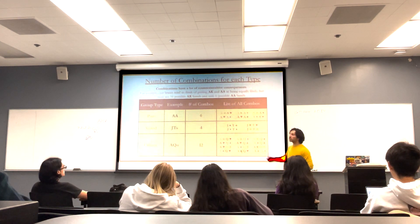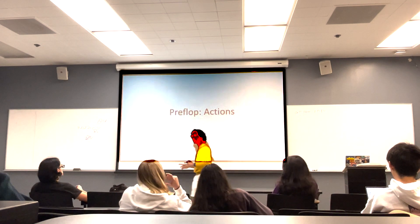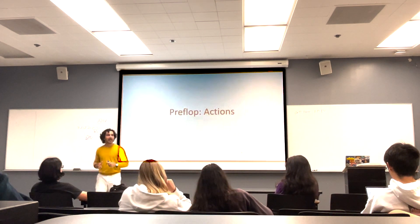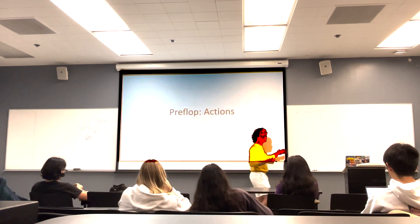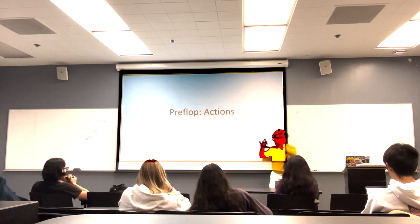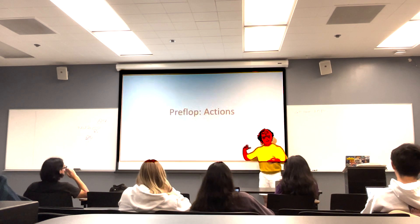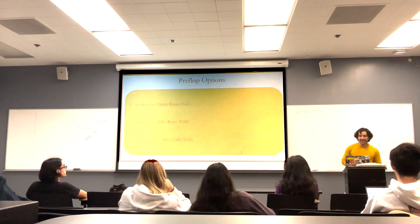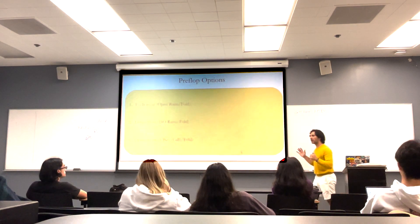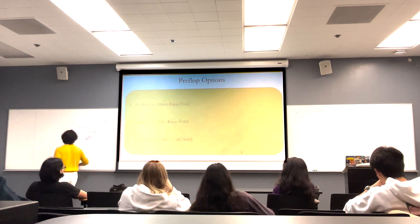With an understanding of the matrix, pot odds, implied odds, and the rules of the game — understanding our two preflop cards, the flop being the first three community cards, and the turn and river — we can now get into our preflop agenda. What is our preflop agenda? There are three possible options that can occur.